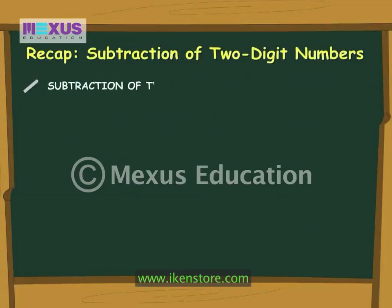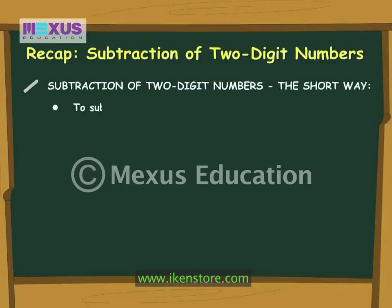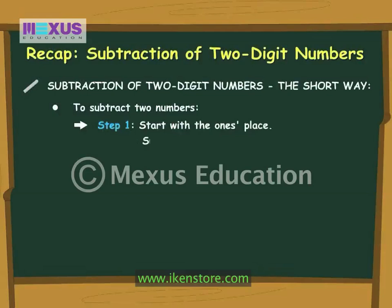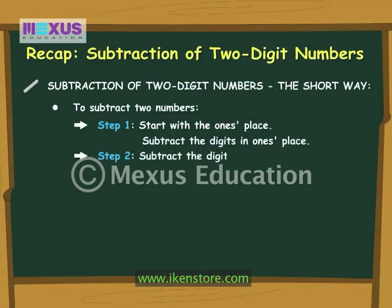Subtraction of two-digit numbers the short way. To subtract two numbers: Step 1, start with the ones place and subtract the digits in the ones place. Step 2, subtract the digits in the tens place.